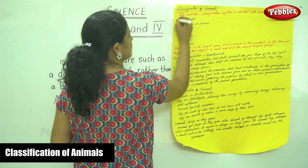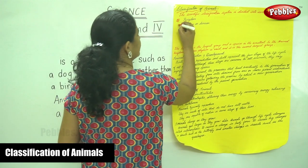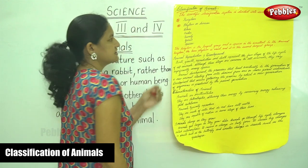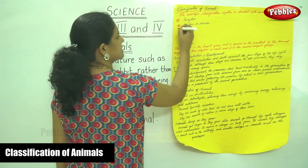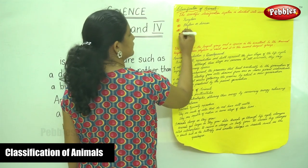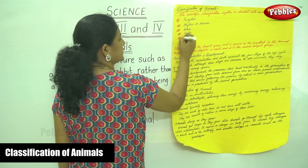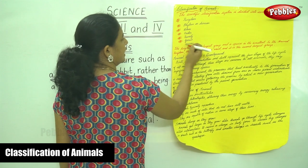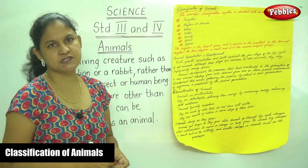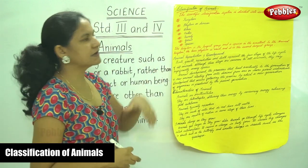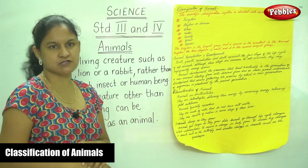The seven major groups are: first, the kingdom; next is your phylum or division; then your class; the fourth is your order; then your family, your genus, and your species. These are the seven major groups that have been scientifically classified.